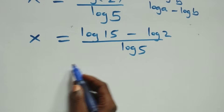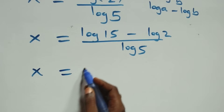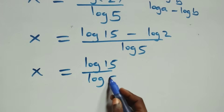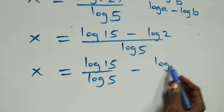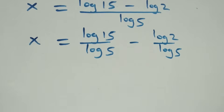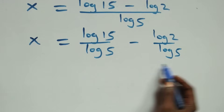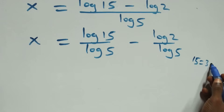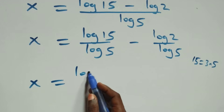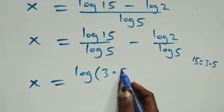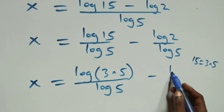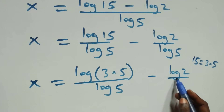We separate this into two fractions and we have x equals to log 15 over log 5 minus log 2 over log 5. Also, 15 can be written as 3 times 5, which implies what we have becomes x equals to log(3 times 5) over log 5 minus log 2 over log 5.